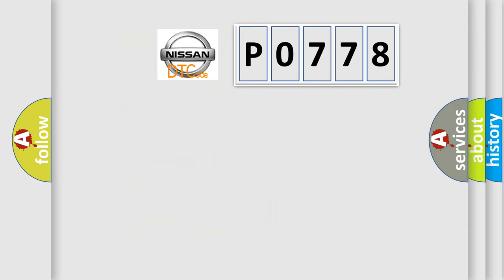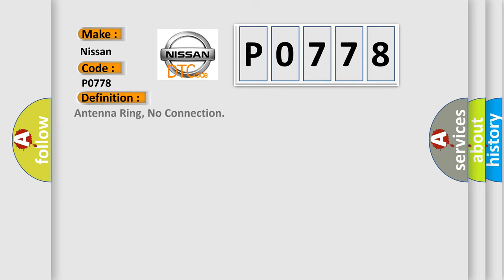So, what does the diagnostic trouble code P0778 interpret specifically for Nissan car manufacturers? The basic definition is: Antenna ring, no connection. And now this is a short description of this DTC code.